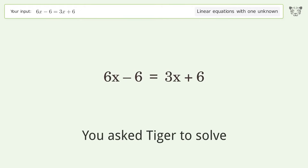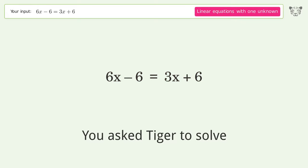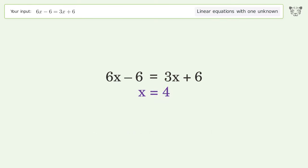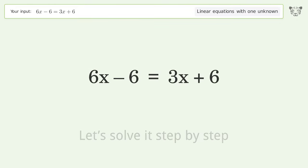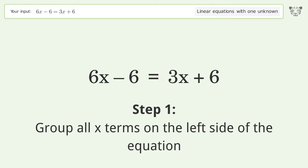You ask Tiger to solve this. This deals with linear equations with one unknown. The final result is x equals 4. Let's solve it step by step. Group all x terms on the left side of the equation.